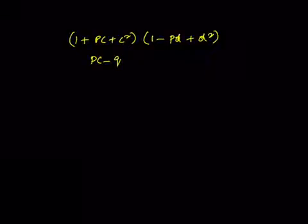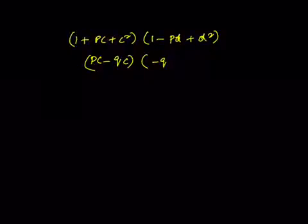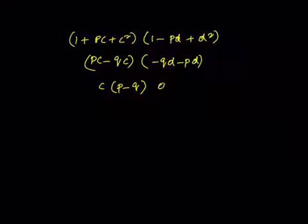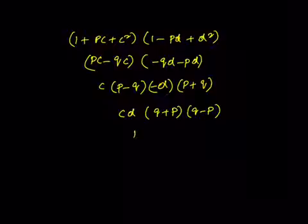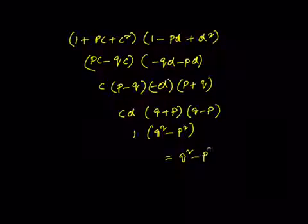We can take c common giving c(p − q), and take −d common giving −d(p + q). This product is c·d · (q + p) · (q − p) = c·d · (q² − p²). Since we know c·d = 1, the result is 1 · (q² − p²), which is nothing but q² − p².